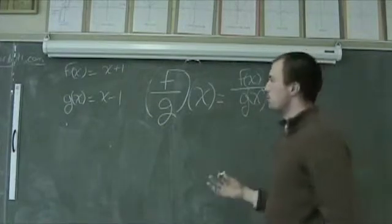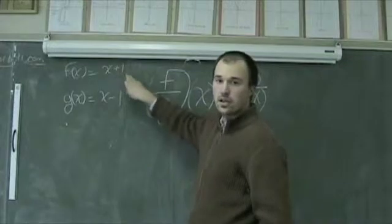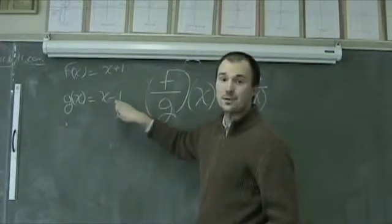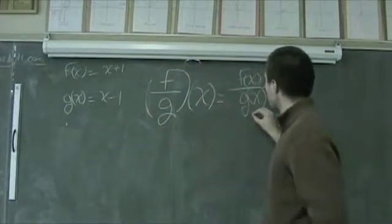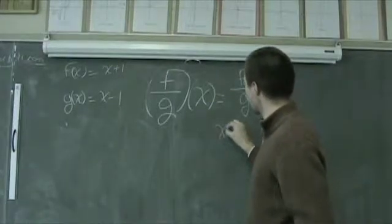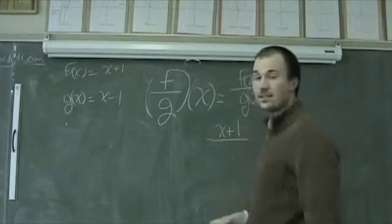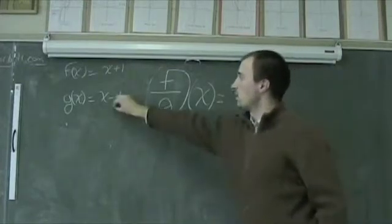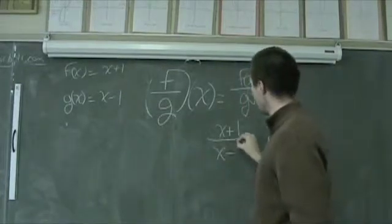And as we've seen before, we're still working with f of x equals x plus 1, g of x is equal to x minus 1, so I'm going to take and insert my function for f of x, which is x plus 1, divided by my g of x, which is x minus 1.